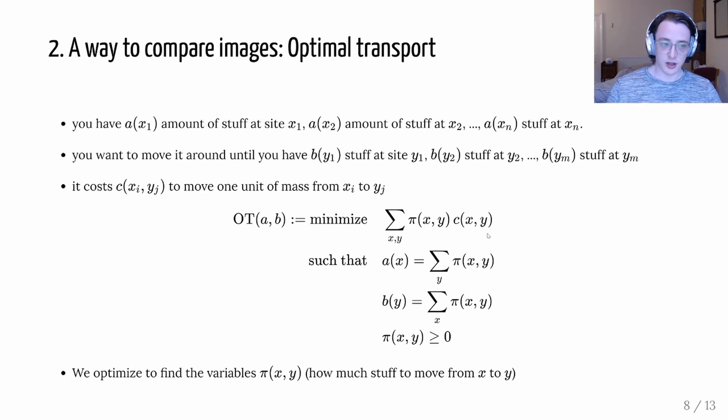And how does it work? So let's say we have some amount of stuff, A of x1 stuff at site x1. A of x2 amount of stuff at site x2 and so forth. And we want to reconfigure it so that we have b of y1 amount of stuff at site y1 and so on. So the original example is with sand piles. We have these different piles of sand in some configuration. We want to move them around to a different configuration of piles of sand.